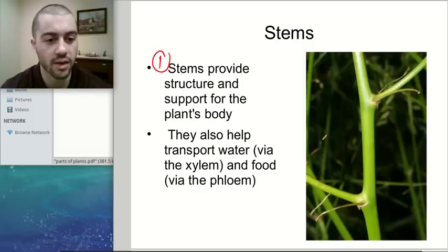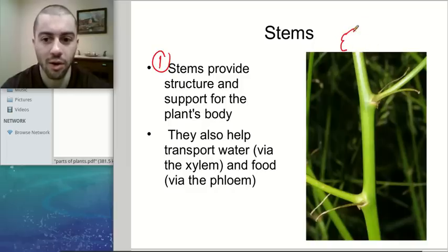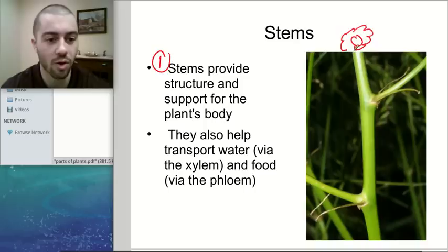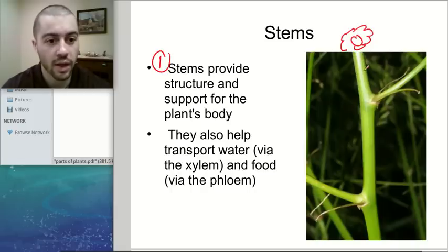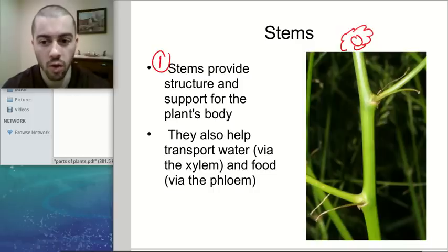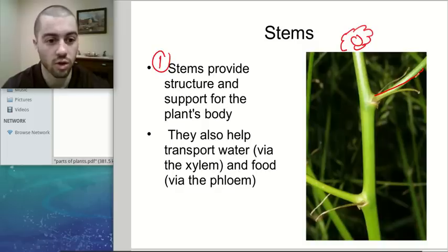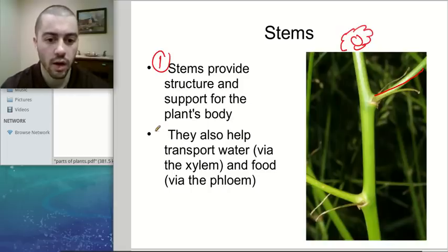The stems provide the structure for the body of the plant. If a plant has a big flower on top, the heavy part at the top — the flower, the tree branches, whatever type of plant it is — needs to be supported, and that's what the stems, or in the case of trees, trunks, do for these plants. If we have branches going off to the side, these provide structure for whatever is hanging off — be it leaves, flowers, fruit, or whatever. So stems provide structure and support.